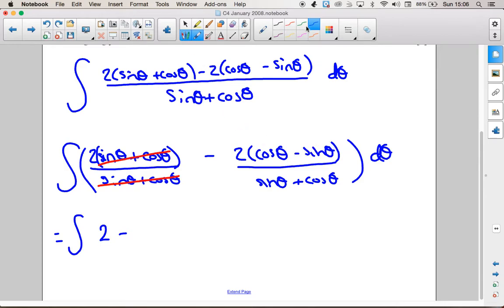And that's the ln rule, the log rule. If the differential of the bottom is the top, then the answer is the natural log of the bottom. We've got minus 2 lots of that. So we've got minus 2 ln of the bottom of sin theta plus cos theta.